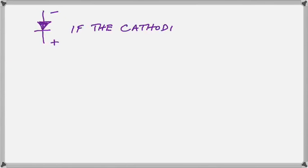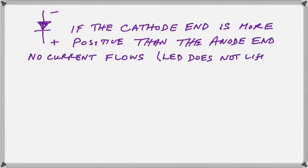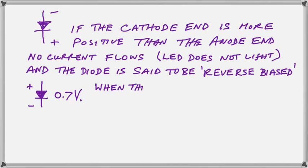Alright, so if the cathode end is more positive than the anode end, then we say that the diode is reverse biased. So let's learn this terminology. A reverse biased diode is not conducting electricity, and a forward biased diode is. So there we show a forward biased diode. And we tell you about it.